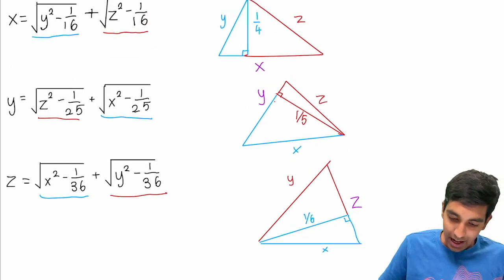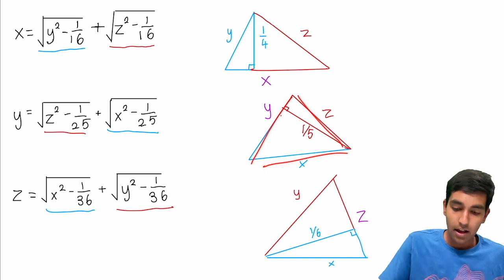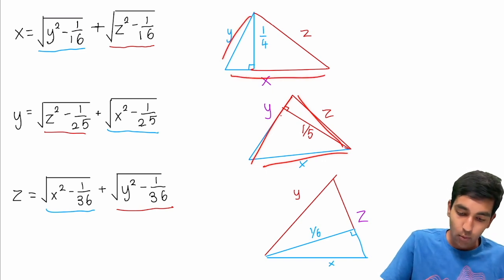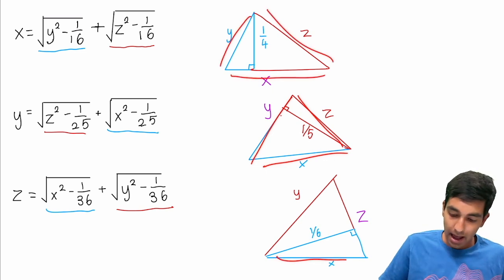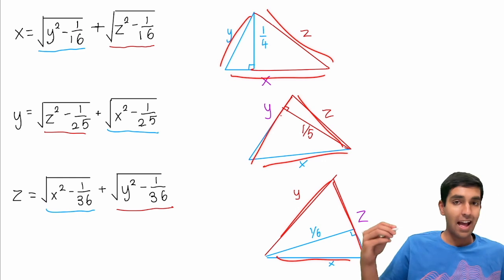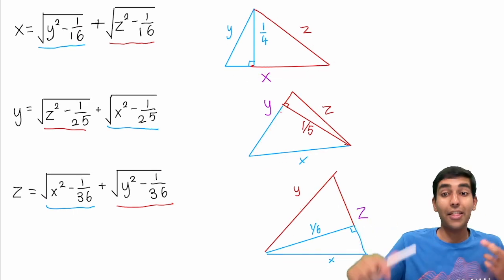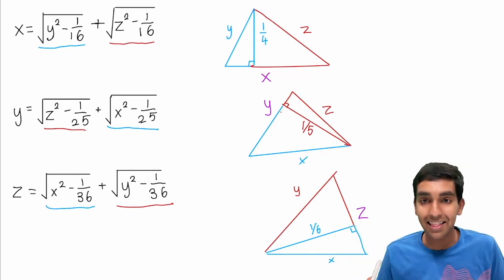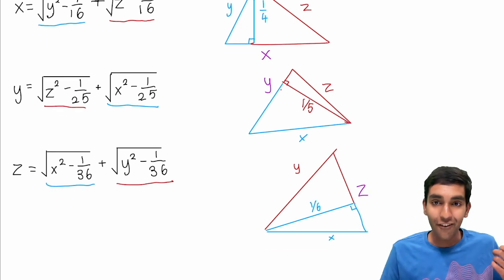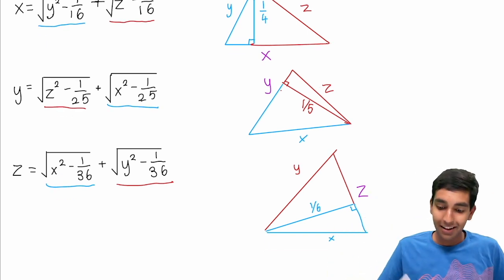So we have three triangles — one with sides X, Y, Z for each equation. And I know my drawings aren't perfect, but they all have the same side lengths. Therefore, they're congruent by SSS congruence.